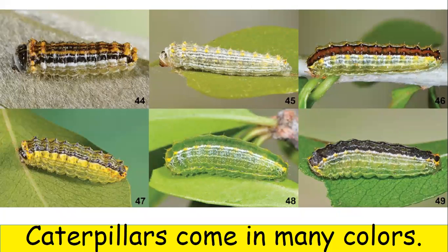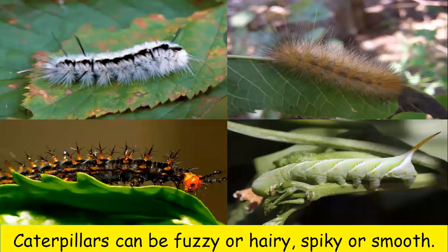Caterpillars come in many colors. Here are just a few caterpillars and their colors. Caterpillars can be fuzzy, hairy, spiky, or smooth.